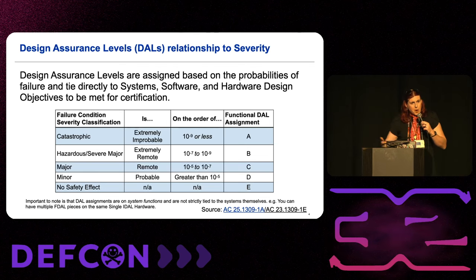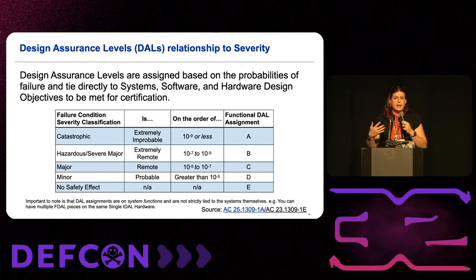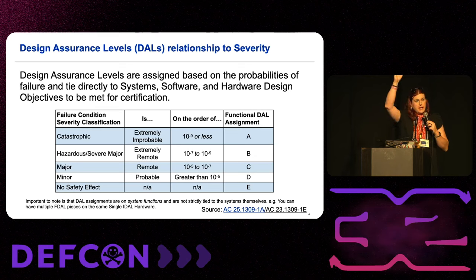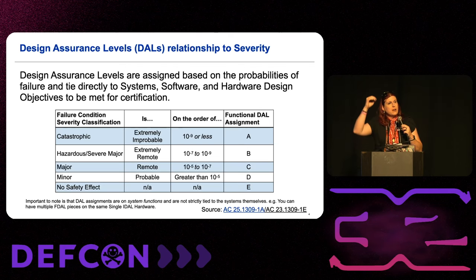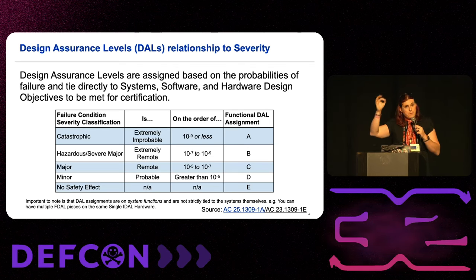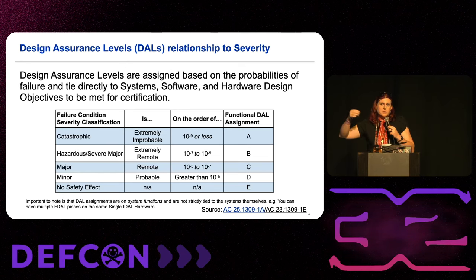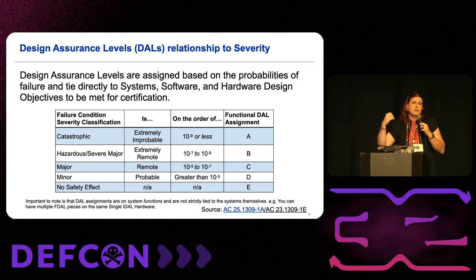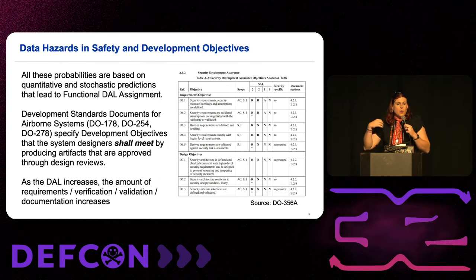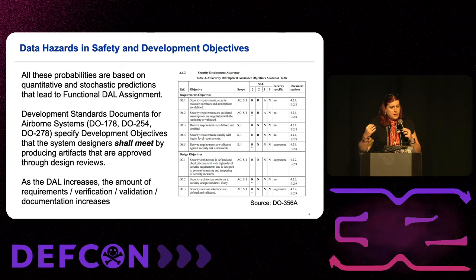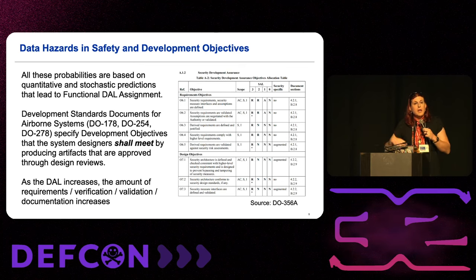The way the industry works through those probabilities is through functional hazard assessments, which take a functional look at the individual functions that trace down throughout the system and look at all the points in which that function can be impacted. If it moves through three or four systems, all systems in the chain have to have some way of preventing failure conditions from occurring. These probabilities then go into the functional DAL assignments. And here's where the standards start to come in.